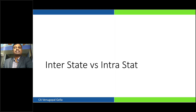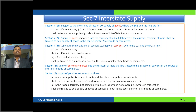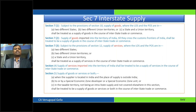What is very important is we should understand the difference between interstate and intrastate transactions. Section 7 of the IGST Act describes what can be an interstate transaction. If it is with regards to goods, a transaction between two different states, two different union territories, or one state and another union territory — that is an interstate supply. Interstate supply means IGST needs to be levied. If it is an intrastate supply, one has to levy CGST and the respective SGST — so if the rate is 18%, it means 9% CGST and 9% SGST.